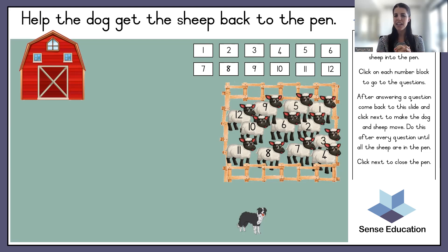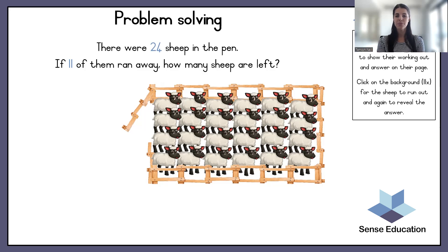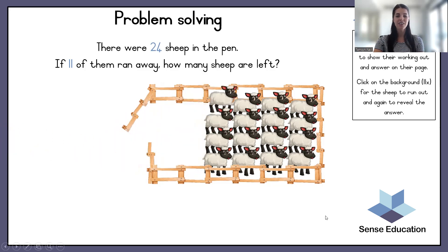The sheep are back in their pen and they are nice and safe for the night. Well done for helping them get back! Now pause this video, get a piece of paper and a pencil, and show your working out. There were twenty-four sheep in the pen. If eleven of them ran away, how many sheep are left? There were twenty-four sheep in the pen; if eleven ran away — and there are thirteen sheep left.